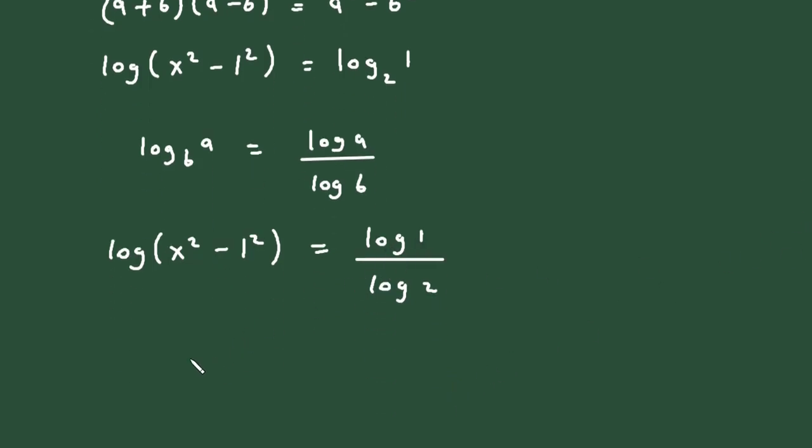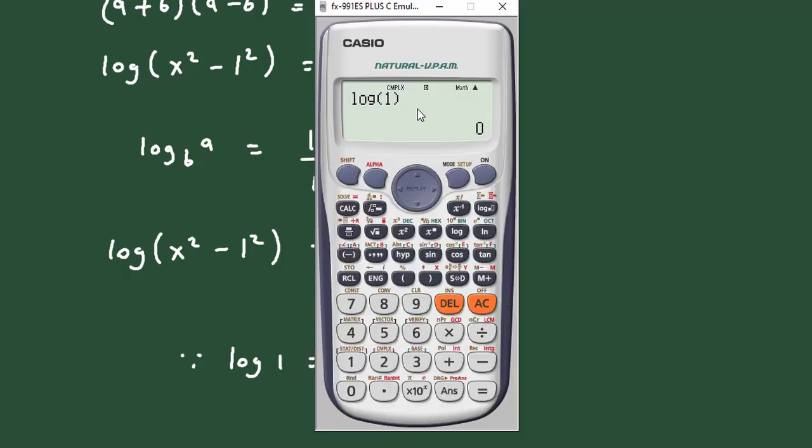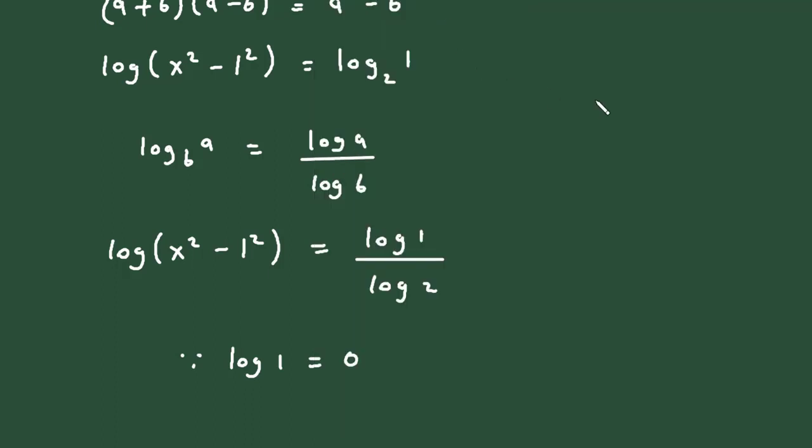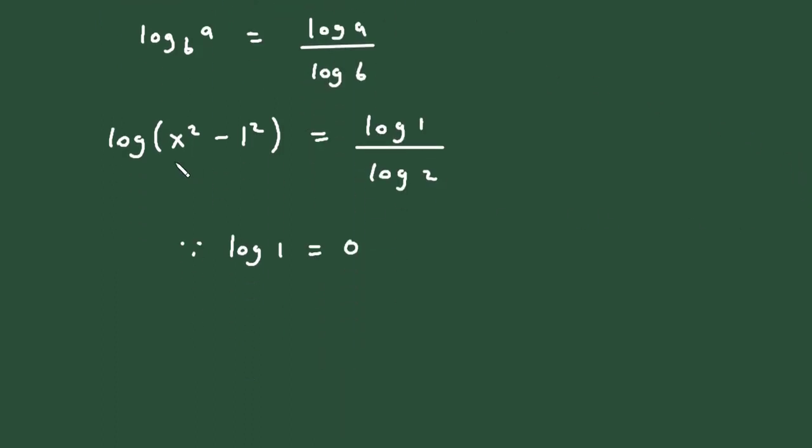Now we know that log 1 value is, since log 1 is equal to 0. We can also verify this, here we can see log 1 is equal to 0. So it will be log(x² - 1²) is equal to 0.